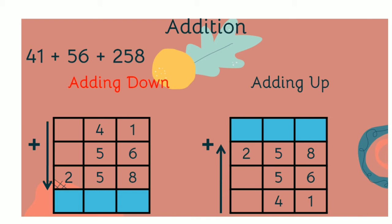First adding down: 1 plus 6 is 7. 7 plus 8 is 15. You write 5 down, 1 up. 1 plus 4 is 5. 5 plus 5 is 10.